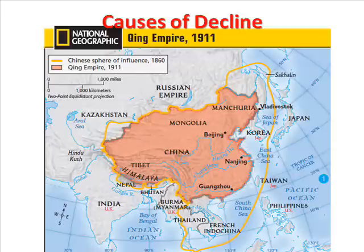Population growth made things worse. By 1900, there were 400 million people in China. Population growth created a serious food shortage, and many people died of hunger.